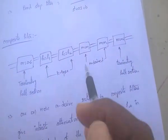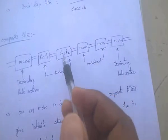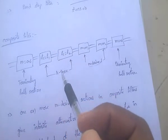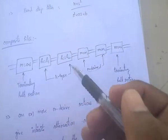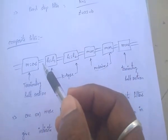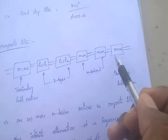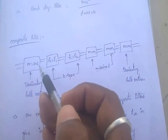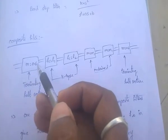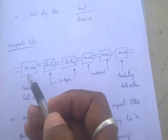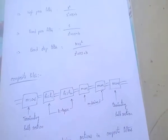Composite type filters are a combination of both K-type filters and M-derived filters. Here there is a terminating half-section. In case of the terminating half-section, the M-value equals 0.6 — this is a very important point.